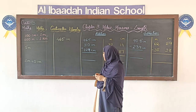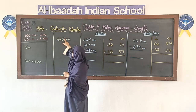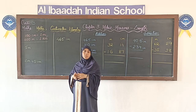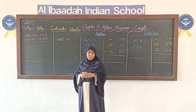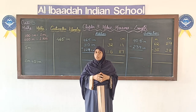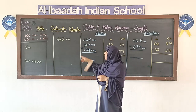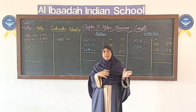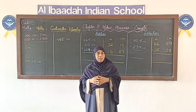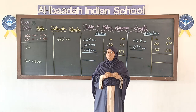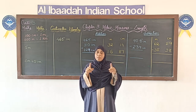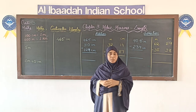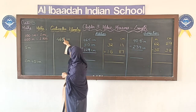When measuring length, we use units like meter, centimeter, kilometer, and millimeter. Meter is the standard unit. Kilometer is the biggest unit — we use it for measuring long distances from one place to another. Millimeter is the smallest unit. If you look at a ruler, you can see the fine small lines — those are the millimeters.